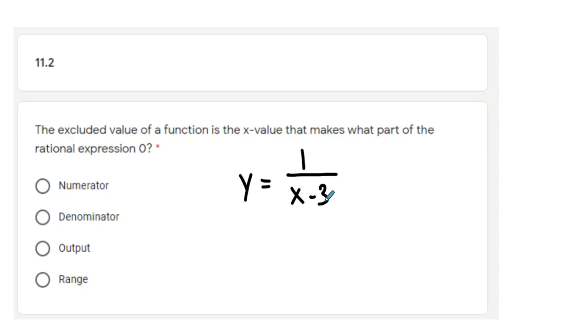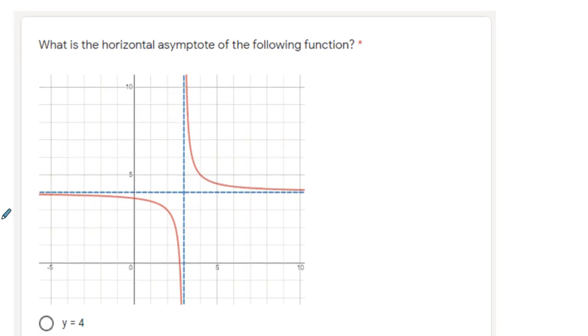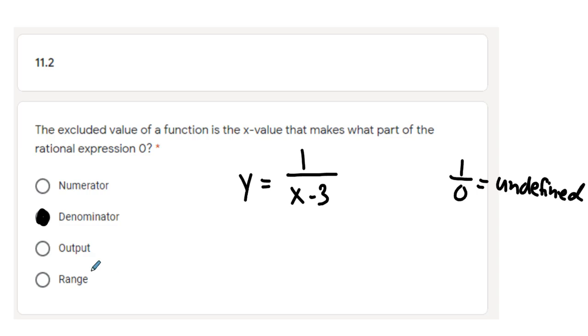The excluded values are the values for x that I cannot pick. I would need to exclude them if I were making a table. And the value I cannot pick for x is 3. If I put 3 in for x, I would have 1 divided by 0, and that is undefined. So it's the value that makes the denominator be 0 because I cannot divide by 0.